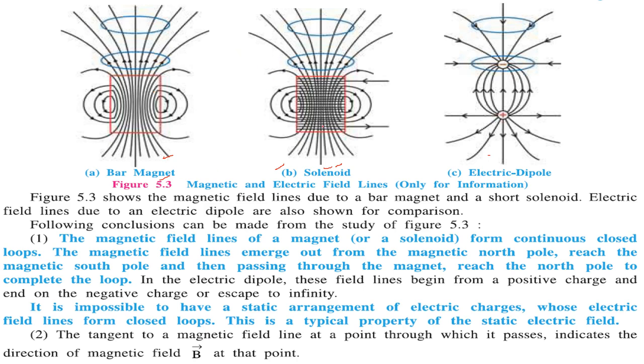In the electric dipole, these lines begin from the positive charge and end on the negative charge, or may escape to infinity. It is impossible to have a static arrangement of electric charges whose electric field lines form closed loops. This is a typical property of static electric field.